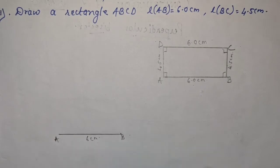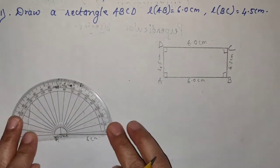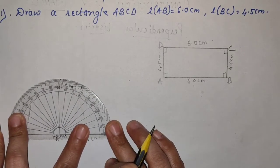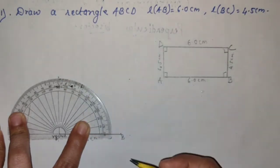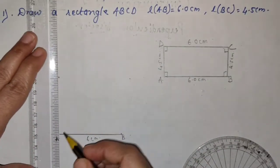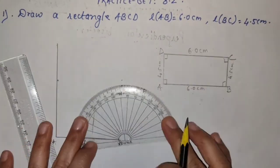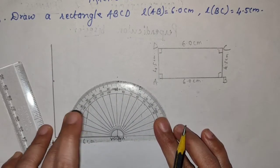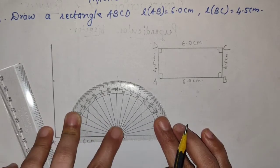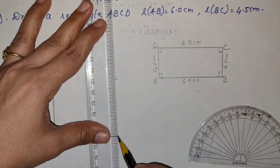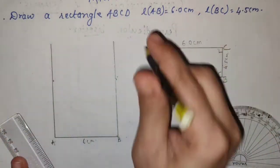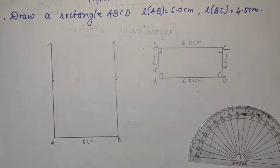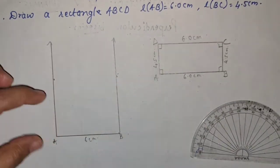First we will take the base — 6 cm, AB. Go systematically. Then we will take a protractor. Keep it on A. पहले आप 90 degree लो — join करो, यह कोई length नहीं है, बस join करो। Same way यहाँ पर भी 90 degree लो। This is your 90 degree.